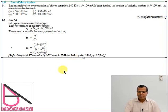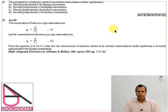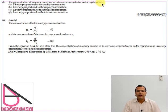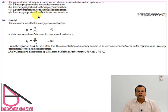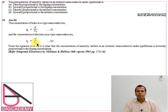Now let us look at the second question from GATE EC 2006: the concentration of minority carriers in an intrinsic semiconductor under equilibrium is directly proportional to doping — and the options are directly proportional, inversely proportional to doping concentration, directly proportional to intrinsic, or inversely proportional. From the formula, it is very clear that minority carrier concentration is inversely proportional to doping concentration.